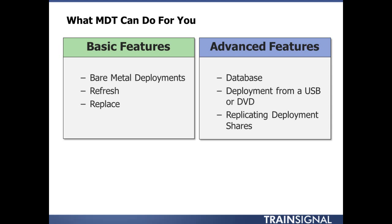In a replace scenario, you may currently have a Windows 7 workstation where the user has stored data locally, along with applications and application settings. What we need to do is capture all their user data settings — like IE favorites — and application settings, and store those on a server somewhere. Then we return or dispose of that old machine, bring in the brand new machine, lay down the Windows 8 image, and then restore the user's data settings and application settings.